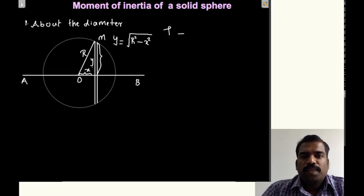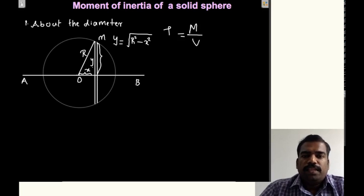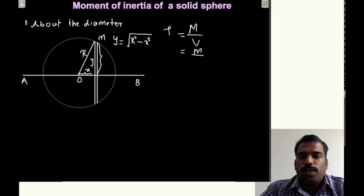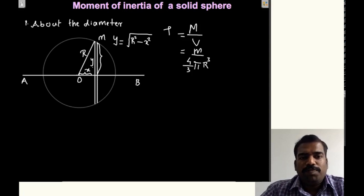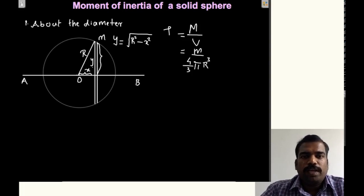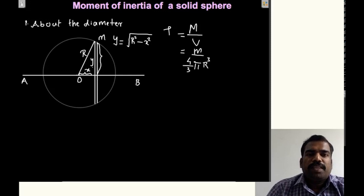To find the mass of the slice, we first find the mass per unit volume of the sphere: rho equals M divided by V. The volume of the sphere is 4/3 π R cubed. So rho equals M divided by 4/3 π R cubed. This is the mass per unit volume of the sphere. Now we need to find the volume of that particular slice.